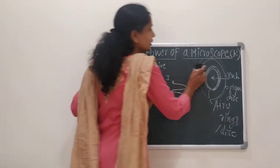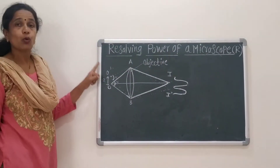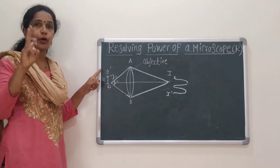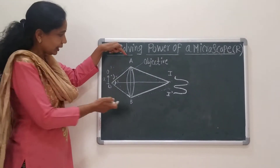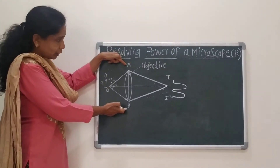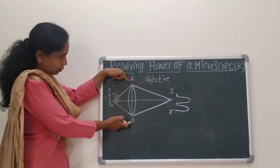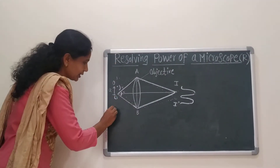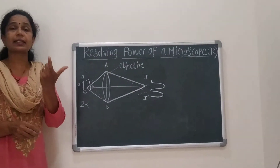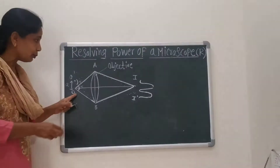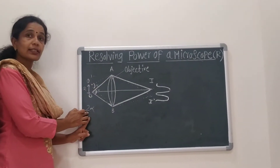Let us consider this ray diagram. O and O' are the two point objects separated by a distance A. AB is the objective lens. The angle 2-alpha is the angular separation between the object and the objective lens.